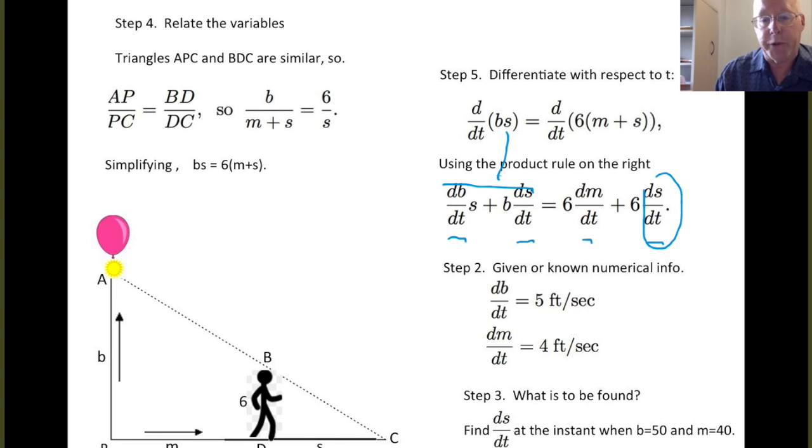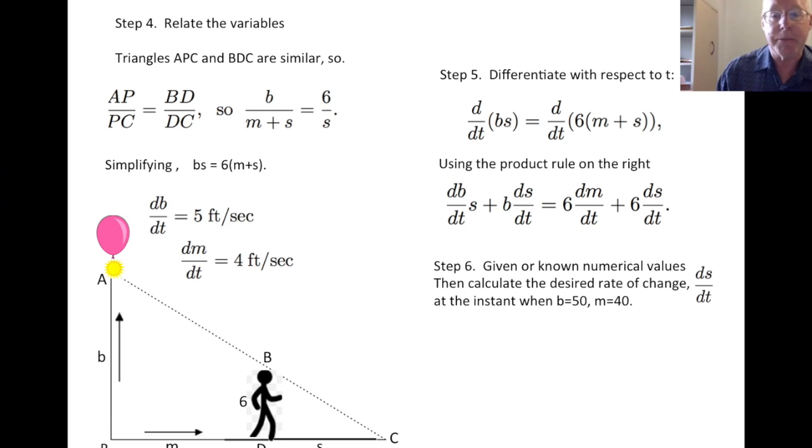So there is our differentiated relationship. And we now see the quantity that we were interested in, the dS/dt, coming into the problem. Now that we know the relationship between the changes and the variables, it's time to ask what happens at a particular instant in time. So we've kept a record here of the changes that we know about. And at this stage, we now can put in the given numerical values and calculate the desired rate of change, that is dS/dt, at the instant when B equals 50 and M equals 40.